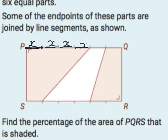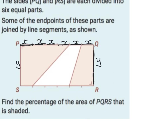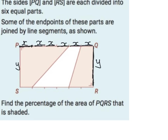We're not given actual measurements, so I'll label the smaller segment length as x, meaning the full long side is 6x. The shorter side I'll call y. The strategy is: find the total area of the rectangle, then subtract the unshaded parts to find the shaded area.